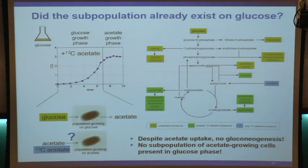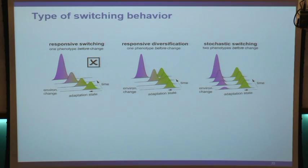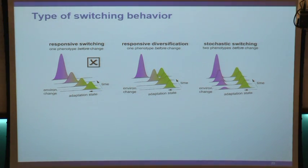So apparently this subpopulation is not present on glucose - it must emerge at the time point of the carbon source switch. There are three types of switching behaviors to think about.